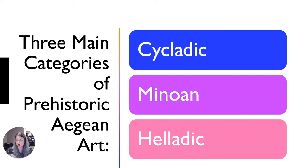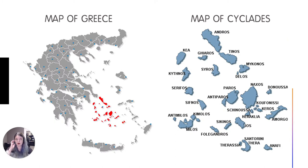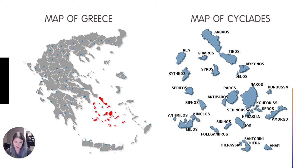The three main categories of prehistoric Aegean art we'll look at today are Cycladic, Minoan, and Helladic. We're going to start with Cycladic art, which we'll spend the least time with. It's still important — it's part of the culture and ties into things we see much later in ancient Greece. Here's a map of Greece on the left. Contemporary Greece includes the mainland and all of these islands.